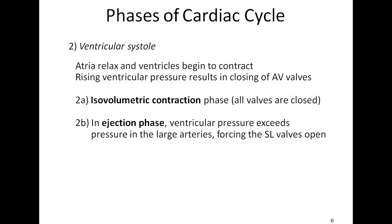This leads us to ventricular systole, where the atria relax and the ventricles begin to contract. This is initiated by the AV node leading down to the bundle of His and then the Purkinje fibers. The first phase within ventricular systole is isovolumetric contraction. The ventricles squeeze on the end diastolic volume of blood, and the pressure in the ventricles quickly rises, exceeding the pressure in the atria.